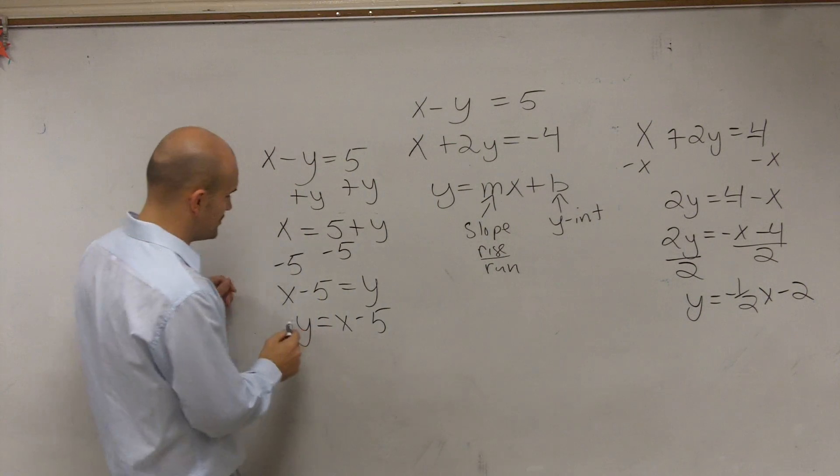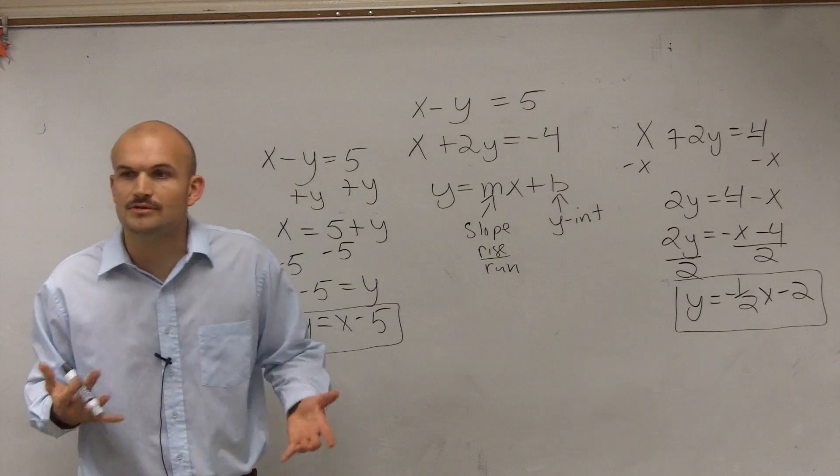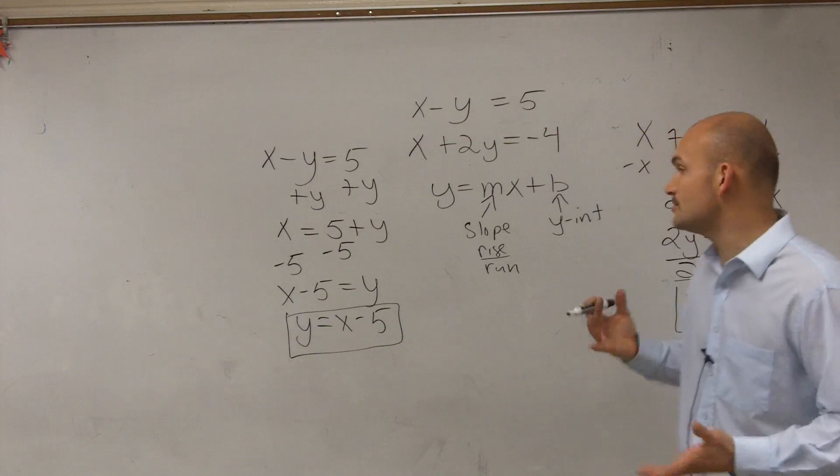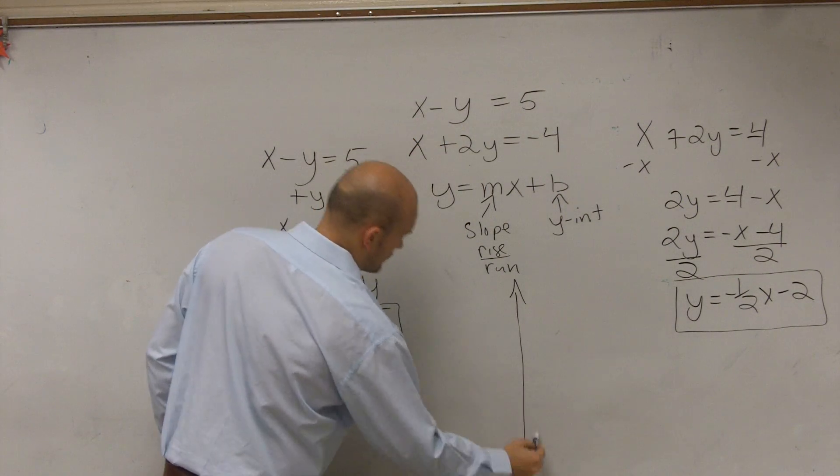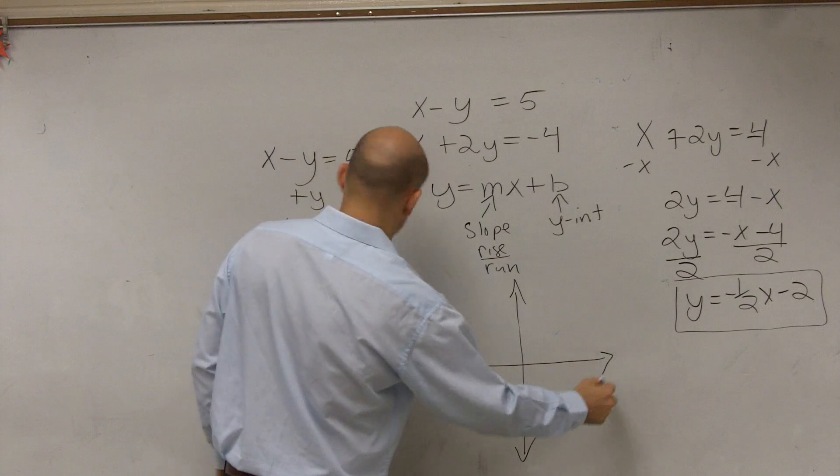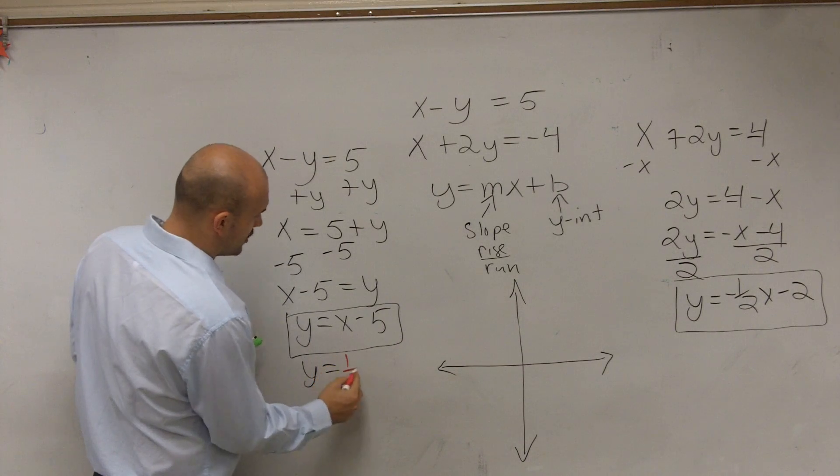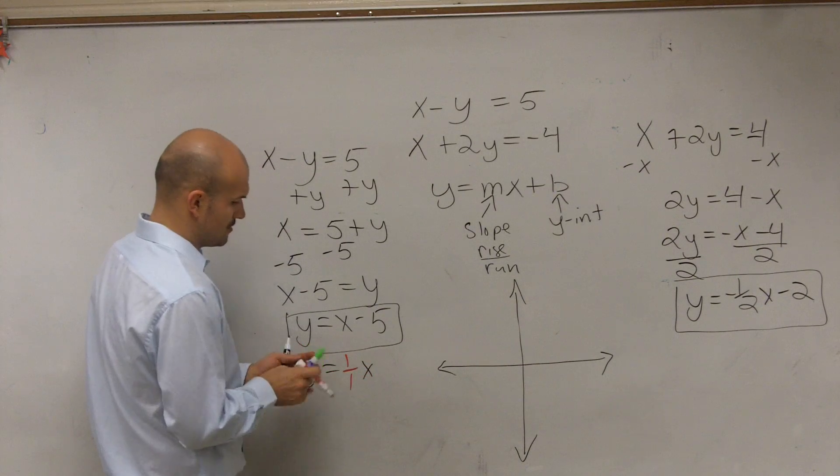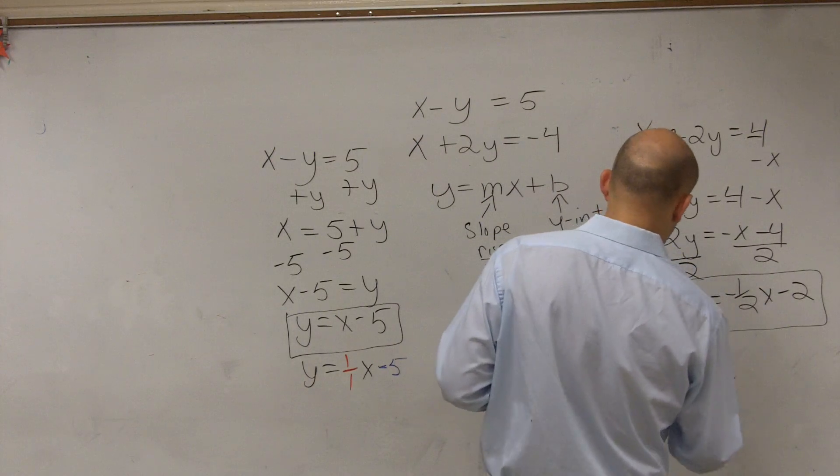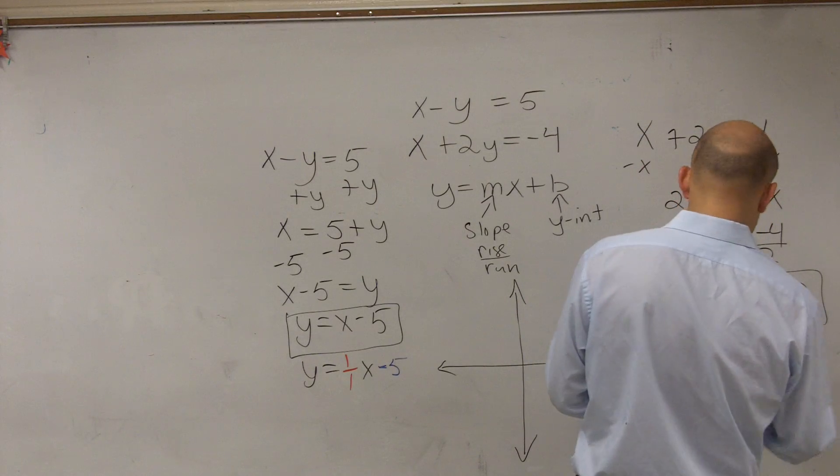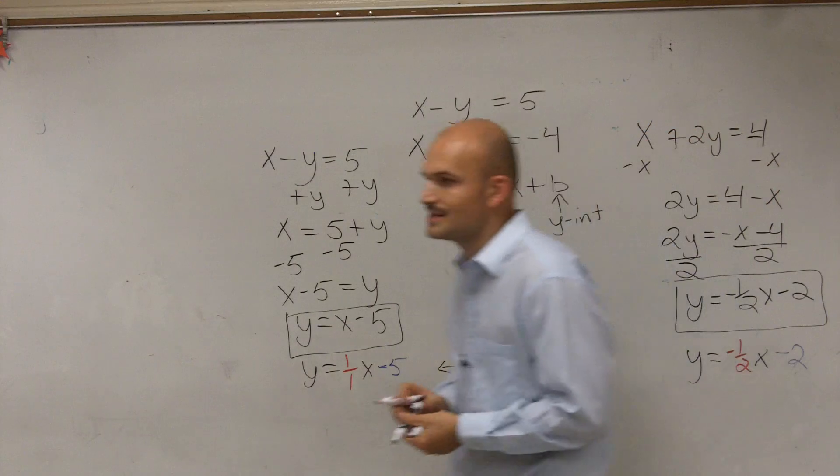Now I'm going to write them in this color coordination so you guys can kind of see what I'm doing. Y equals 1 over 1 x minus 5. And this one would be y equals negative 1 half x minus 2. Now I'm going to write them in this color coordination so you guys can see what I'm doing.